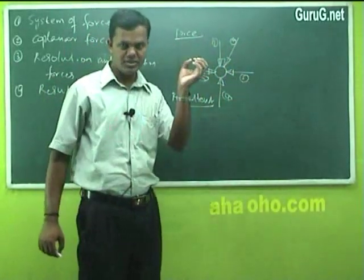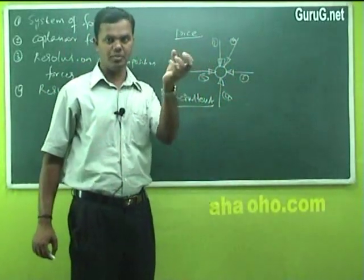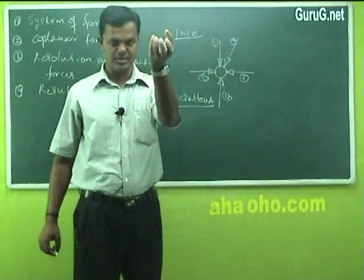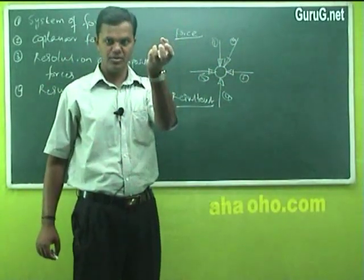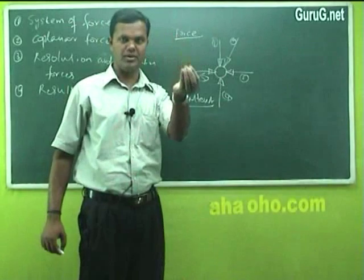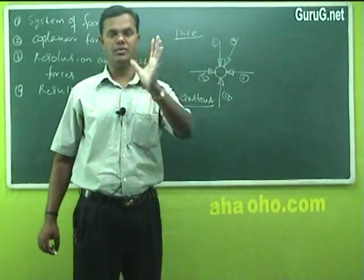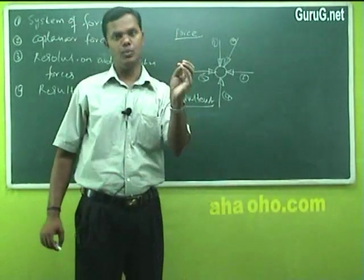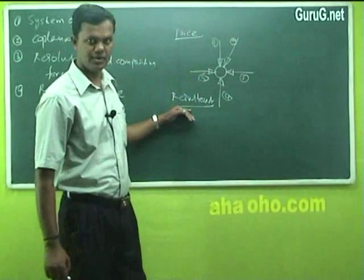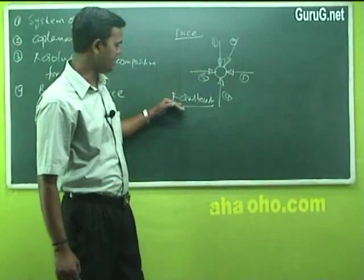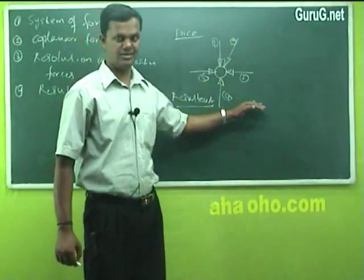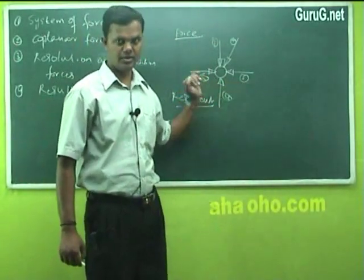Because a force is acting on a body and the body has some mass, that is a value — some magnitude in values of Newton: 1 Newton, 5 Newton, 10 Newton. And in what direction it moves, with that we will find out the resultant value. The resultant is the one which gives the answer.